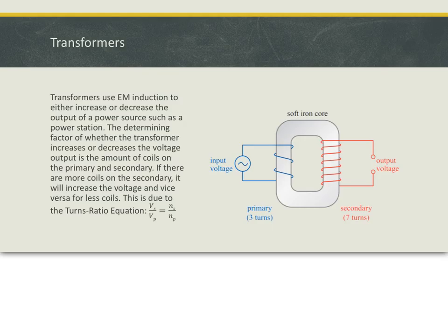Transformers use electromagnetic induction to either increase or decrease the output of a power source, such as a power station. The determining factor of whether the transformer increases or decreases the voltage output is the amount of coils on the primary and secondary. If there are more coils on the secondary, it will increase the voltage and vice versa for less coils. This is due to the turns ratio equation, where the secondary voltage over the primary voltage is equal to the secondary amount of turns over the primary amount of turns.